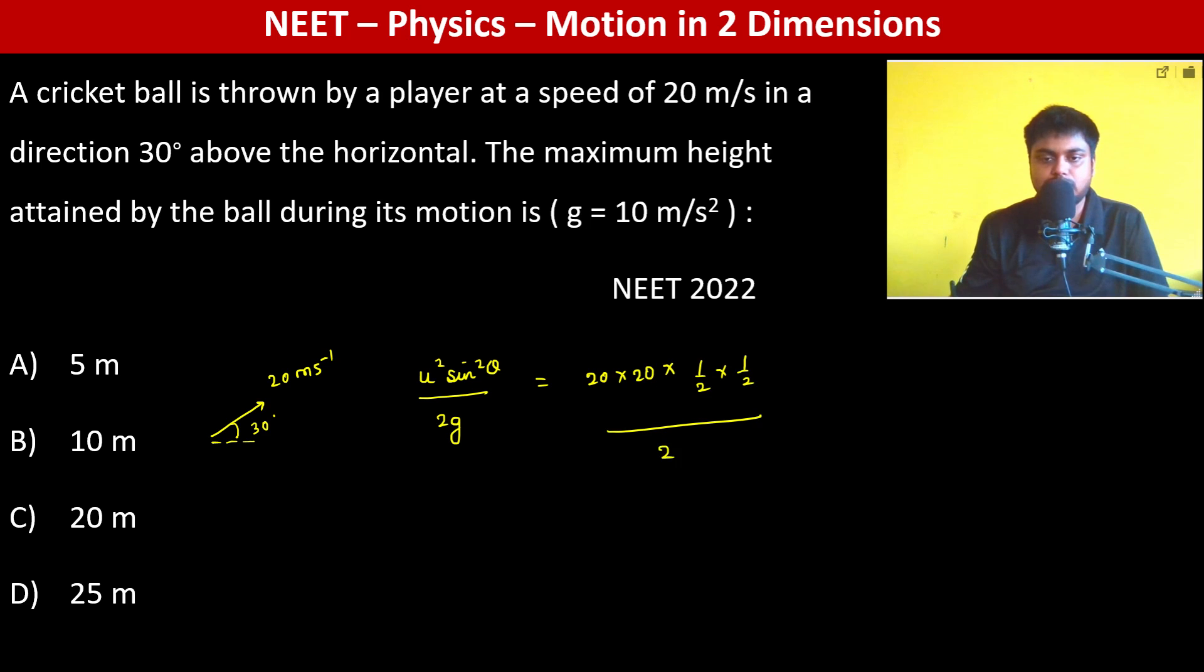Divided by 2 into 10, 20 is gone, so 20 divided by 4 is basically 5. Therefore 5 meters is going to be the answer.